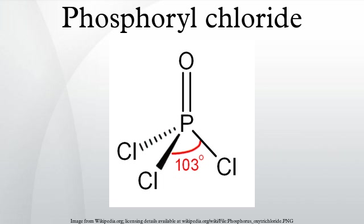Uses: the most important use for phosphoryl chloride is in the manufacture of triaryl phosphate esters such as triphenyl phosphate and tricresyl phosphate. These esters have been used for many years as flame retardants and plasticizers for PVC. Meanwhile, trialkyl esters such as tributyl phosphate are used as liquid–liquid extraction solvents in nuclear reprocessing and elsewhere. In the semiconductor industry, POCl3 is used as a safe liquid phosphorus source in diffusion processes; the phosphorus acts as a dopant used to create N-type layers on a silicon wafer.